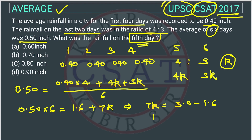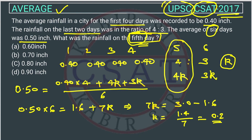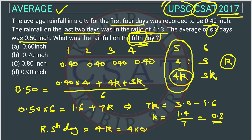The value of k will be 1.4 divided by 7, which equals 0.2. The question asks for the rainfall on the fifth day, which is 4k. Putting in the value of k = 0.2, the rainfall on the fifth day is 4 × 0.2 = 0.8 inches.